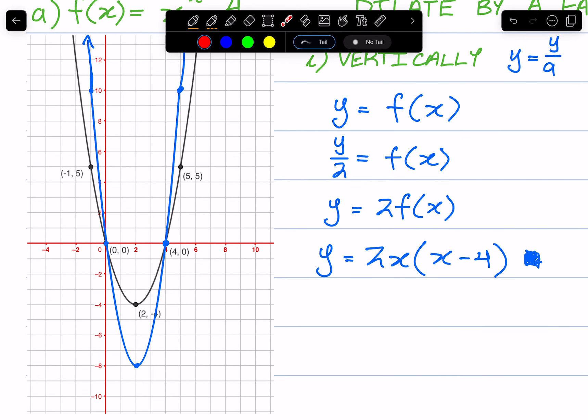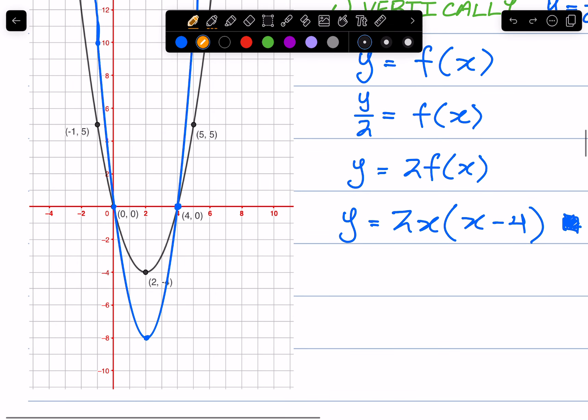So now we're going to be looking at the horizontal distance. So this point, its current horizontal distance is 4. So it's now going to become 8. This point, its horizontal distance currently is 2.